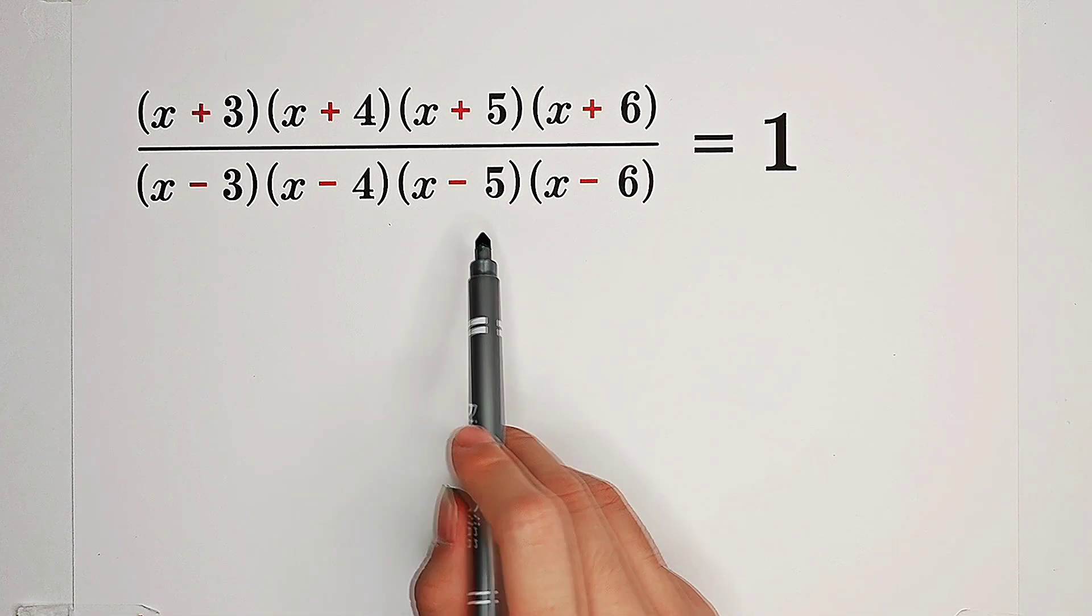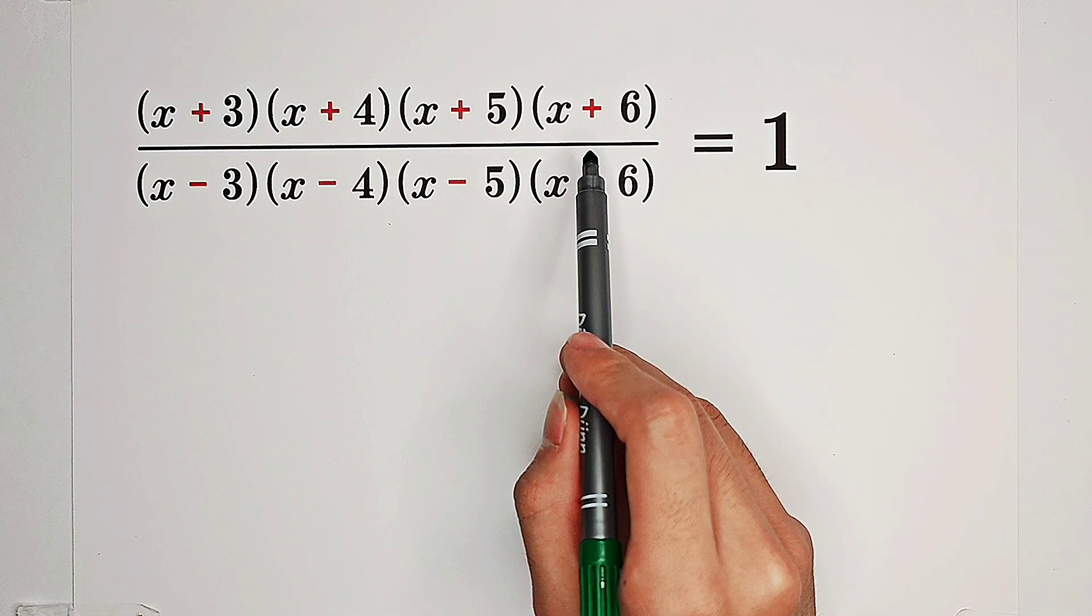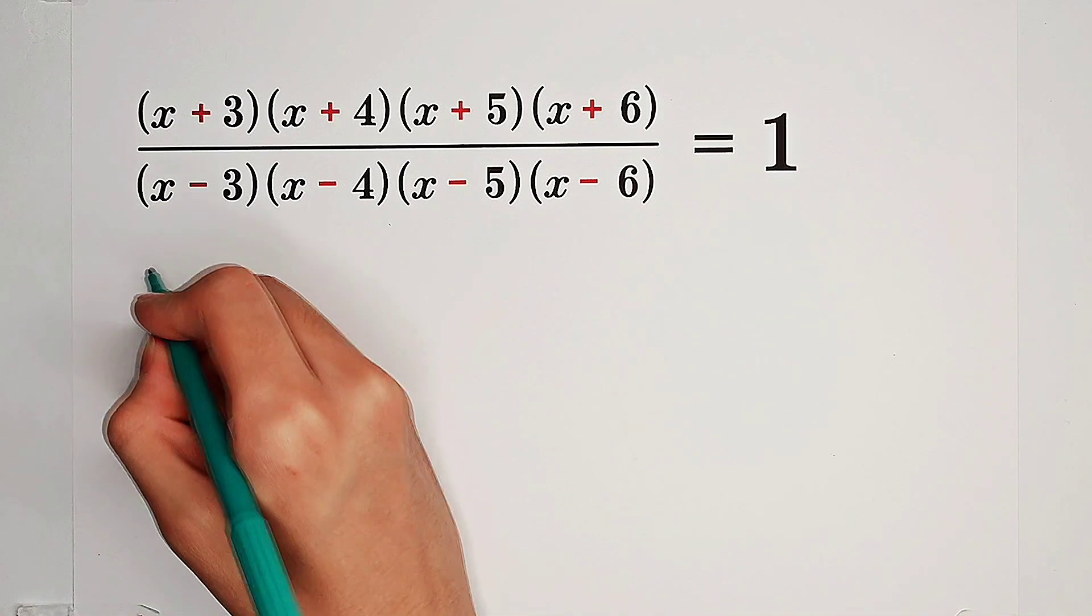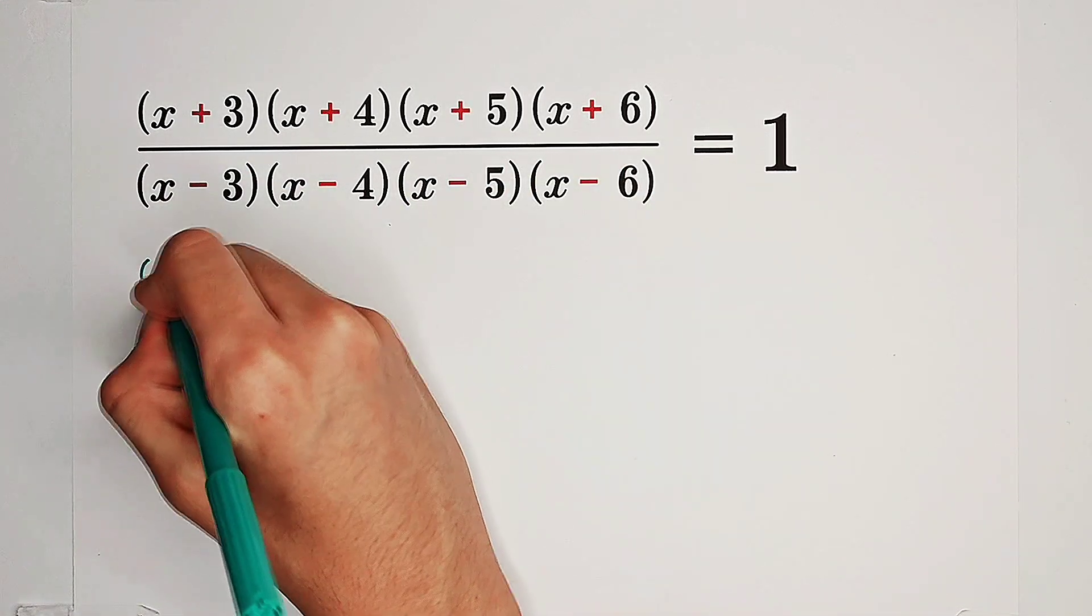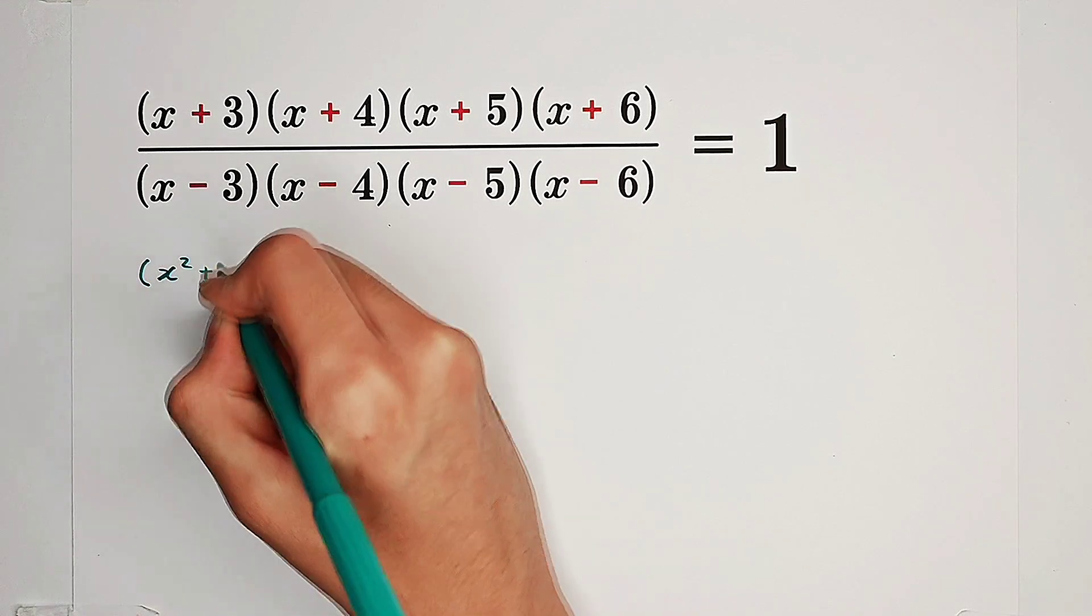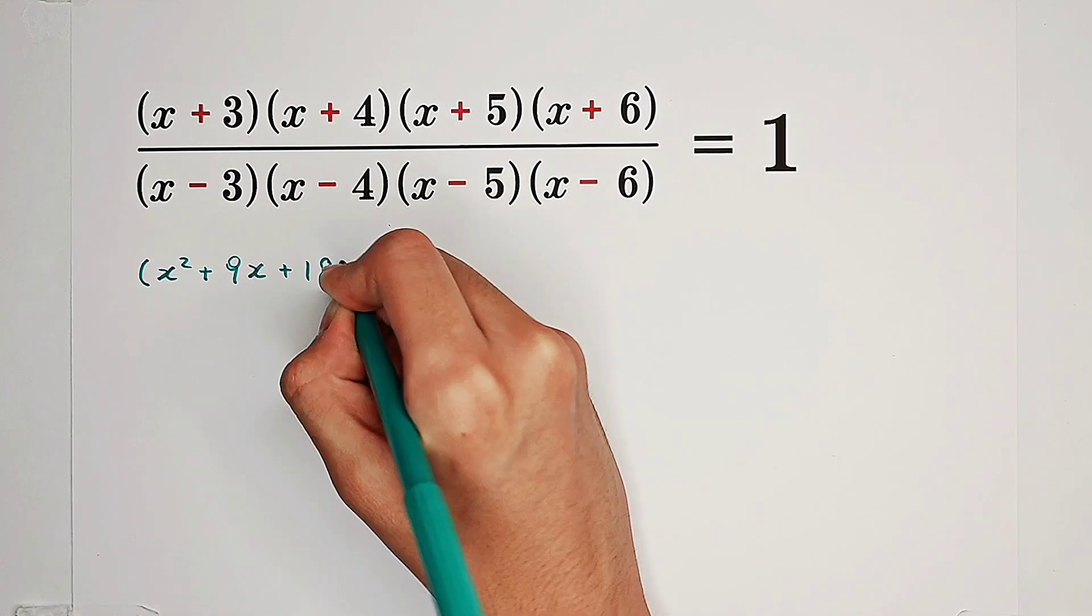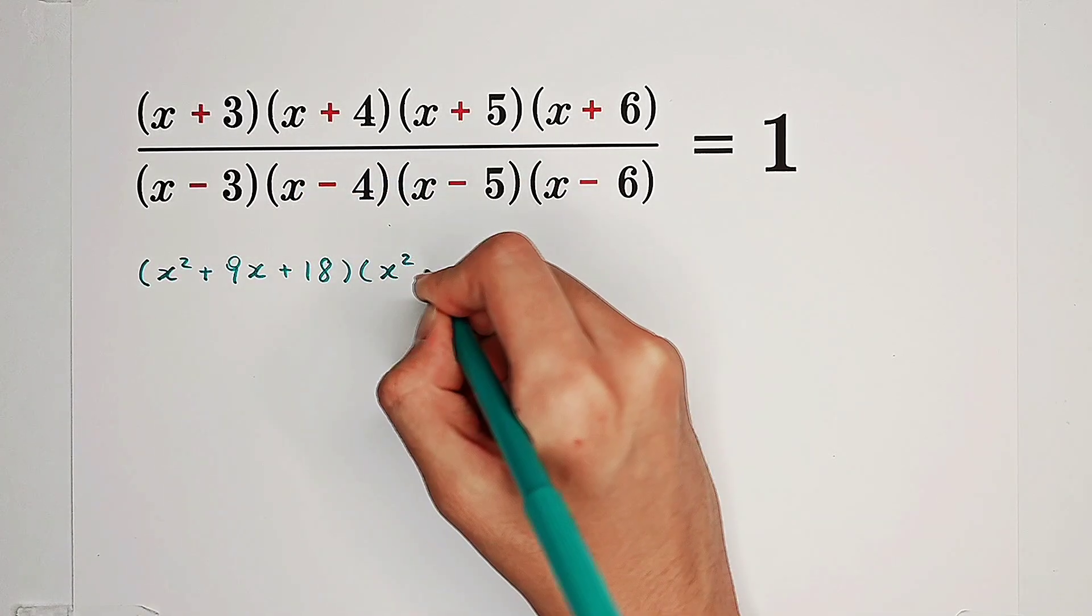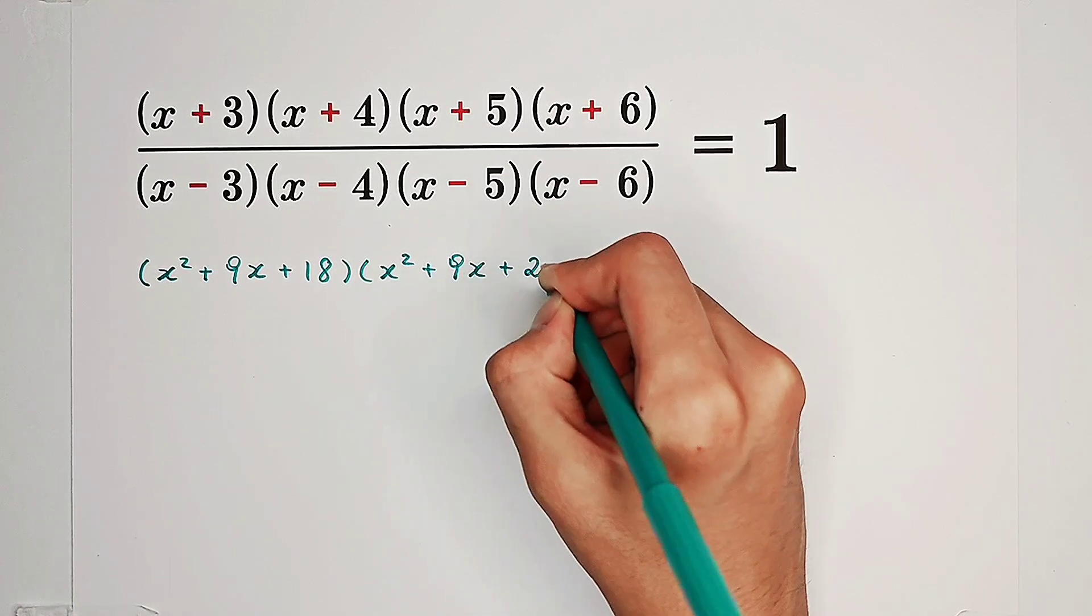So then, we can multiply x plus 3 by x plus 6 firstly, and then these two. x plus 3 times x plus 6 is going to be x squared plus 9x plus 18. x plus 4 times x plus 5 is x squared plus 9x plus 20.